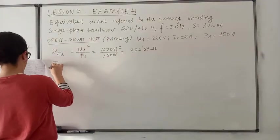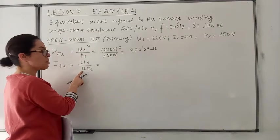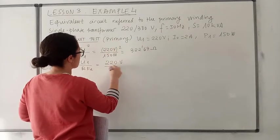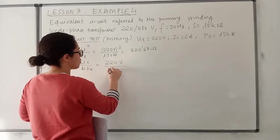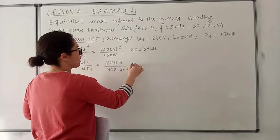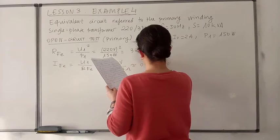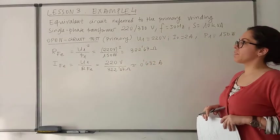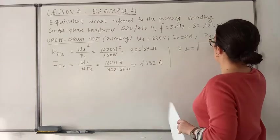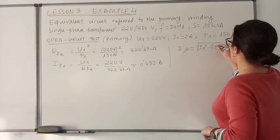We can also obtain the current of iron losses. By applying Ohm's law, the current of iron losses will be the voltage in the primary circuit divided by the resistance of iron losses. The voltage in the primary circuit is 220 V divided by the resistance of iron losses which is 322.67 ohms, giving an approximate value of 0.682 A. Now that we have the current of iron losses and also the no-load current, we can obtain the magnetizing current by doing the square root of the no-load current squared minus the current of iron losses squared.